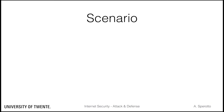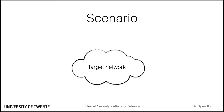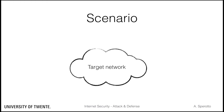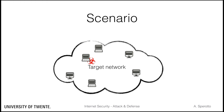So far, we have assumed that our goal is to protect a target network from attacks coming from the outside world. Here, we take another perspective, namely, we assume that an attack has succeeded to penetrate the target network perimeter and is now active in the internal network, for example, by attacking other hosts and stealing information.